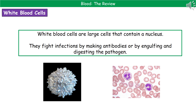The second type of cell we need to know about are the white blood cells. You can identify them quite easily in microscope images because they're the larger ones with a really clear nucleus. Their whole purpose is to fight infections, and they do this in one of two ways: first, by making antibodies, and second, by engulfing and digesting the pathogen. We'll find out more about that in the B6 topic next year.